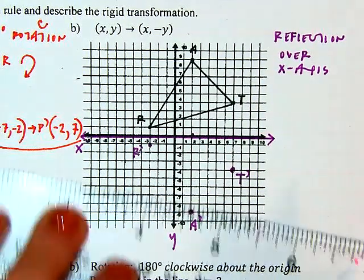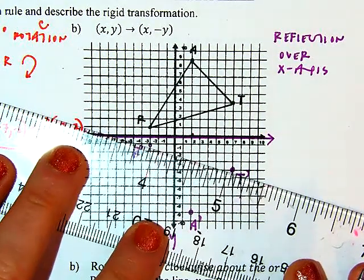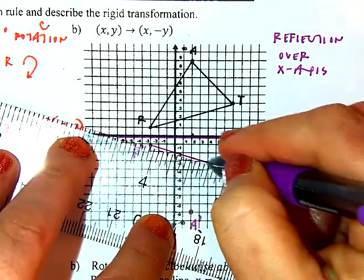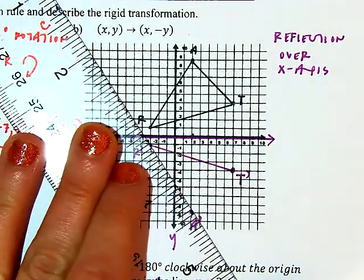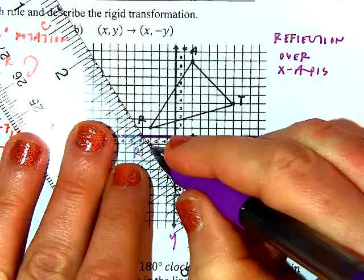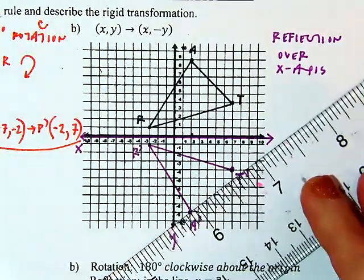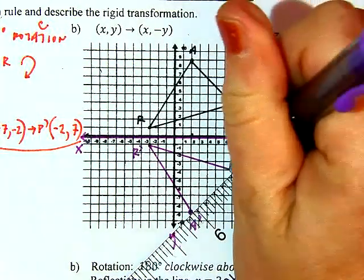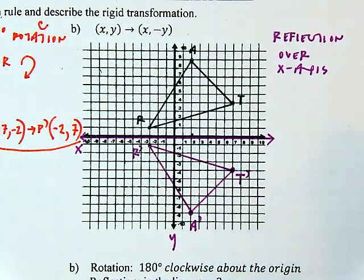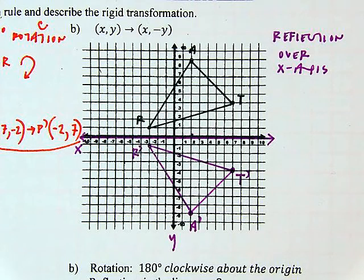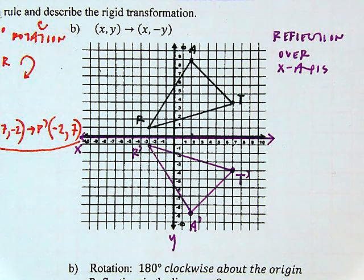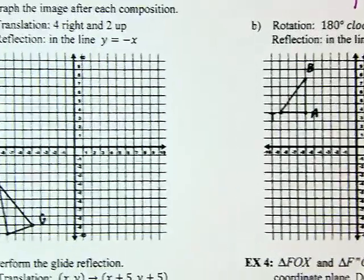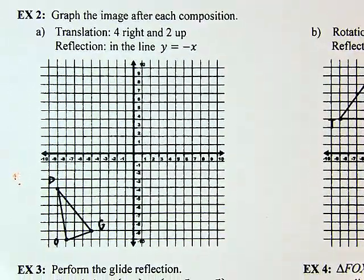Then I connect the dots and here is my transformed figure. Next up, in example two, we're graphing a composition.